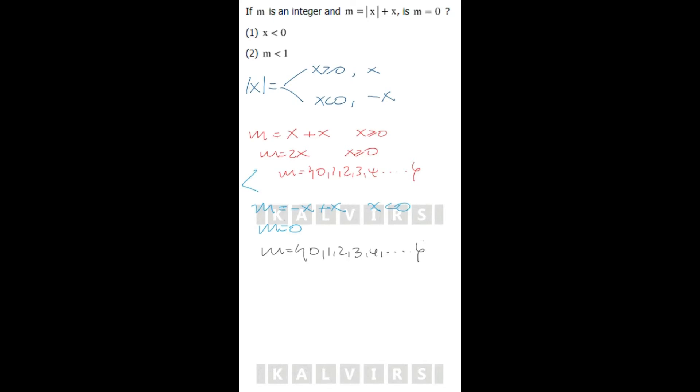First statement: the first statement says x is negative. If x is negative, for sure m will be 0, and this statement is sufficient to solve.